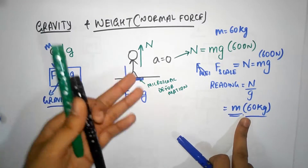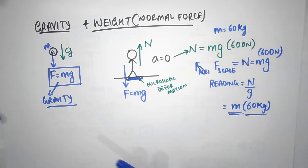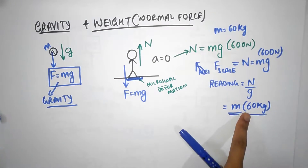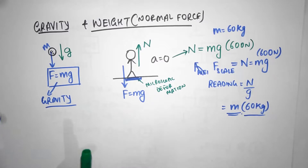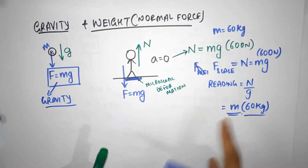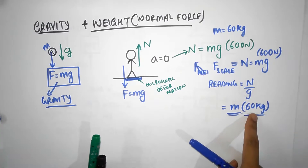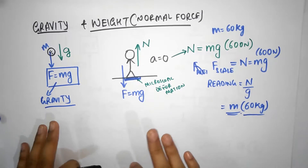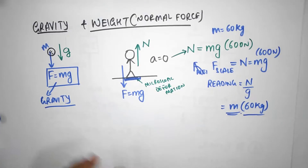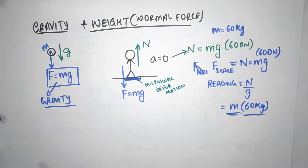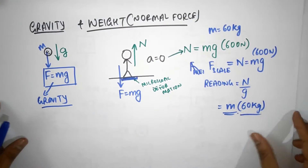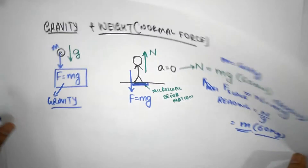We already know that if you stand on a weighing scale and your mass is 60 kg, the scale will show 60 kg. But I'm going to show you that the weighing scale need not always read 60 kg — things can change. That's the whole idea behind understanding what normal force and weight is.